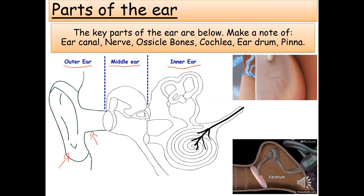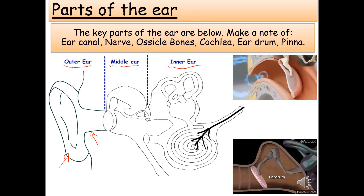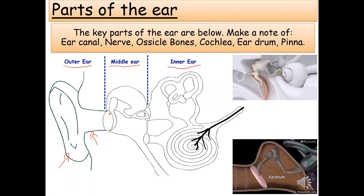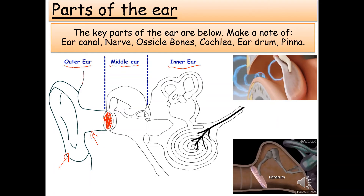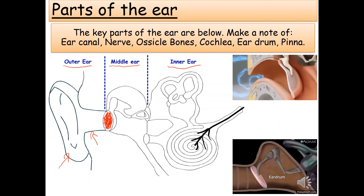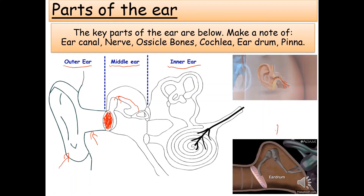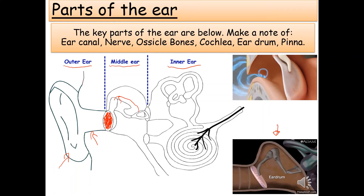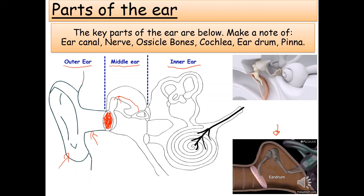The middle ear takes sounds and turns them into vibrations. Sound waves enter through the outer ear and strike the eardrum — a drum-shaped structure. The eardrum vibrates when sounds hit it, and that causes the three small bones behind it to move as well. These three bones working together are called the ossicles.